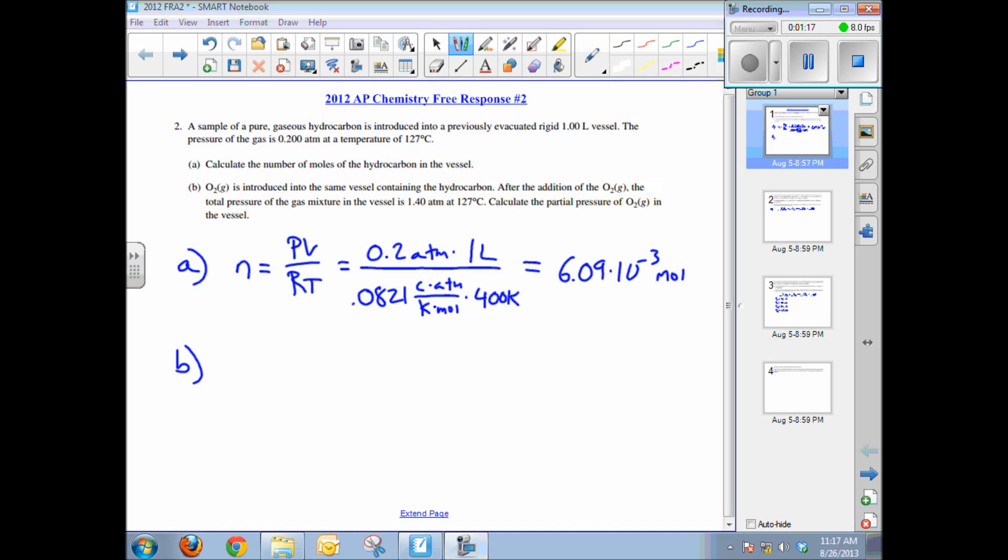Well remember we were told that the initial pressure of the unknown hydrocarbon was 0.2 atmospheres. After the oxygen is introduced, the total pressure is 1.4 atmospheres. So what's the partial pressure of oxygen? Very simply, the total pressure, 1.4 atmospheres minus the initial pressure of the hydrocarbon. So the pressure of the oxygen is 1.2 atmospheres.